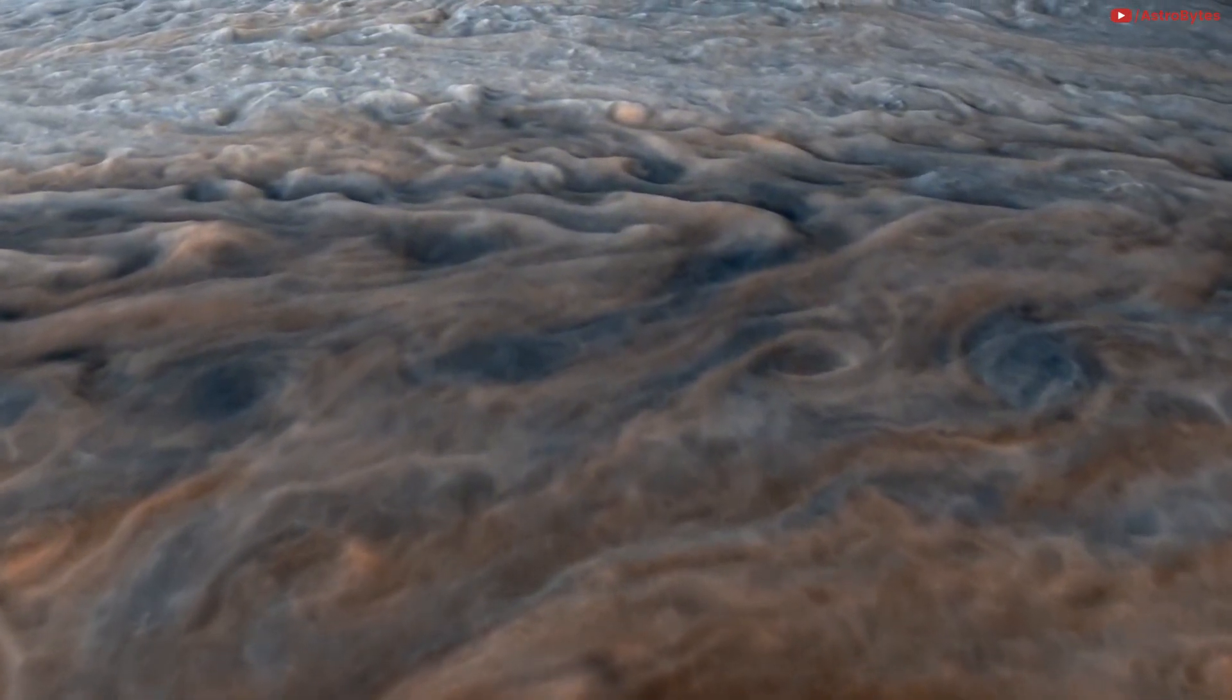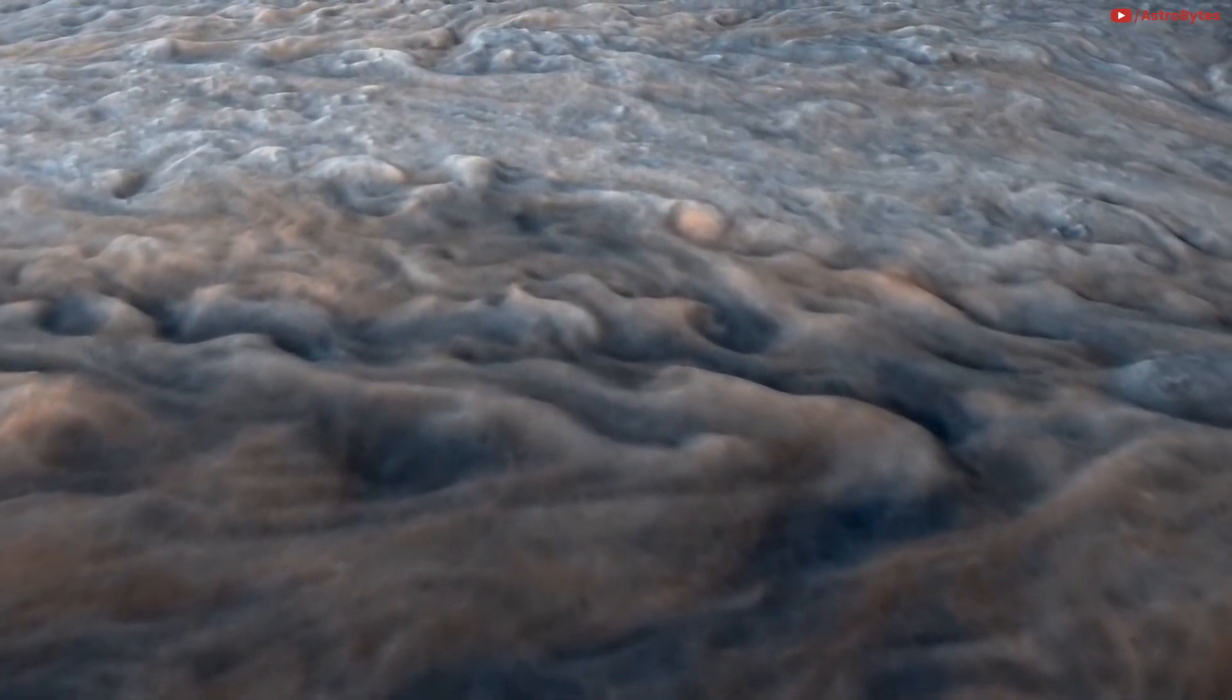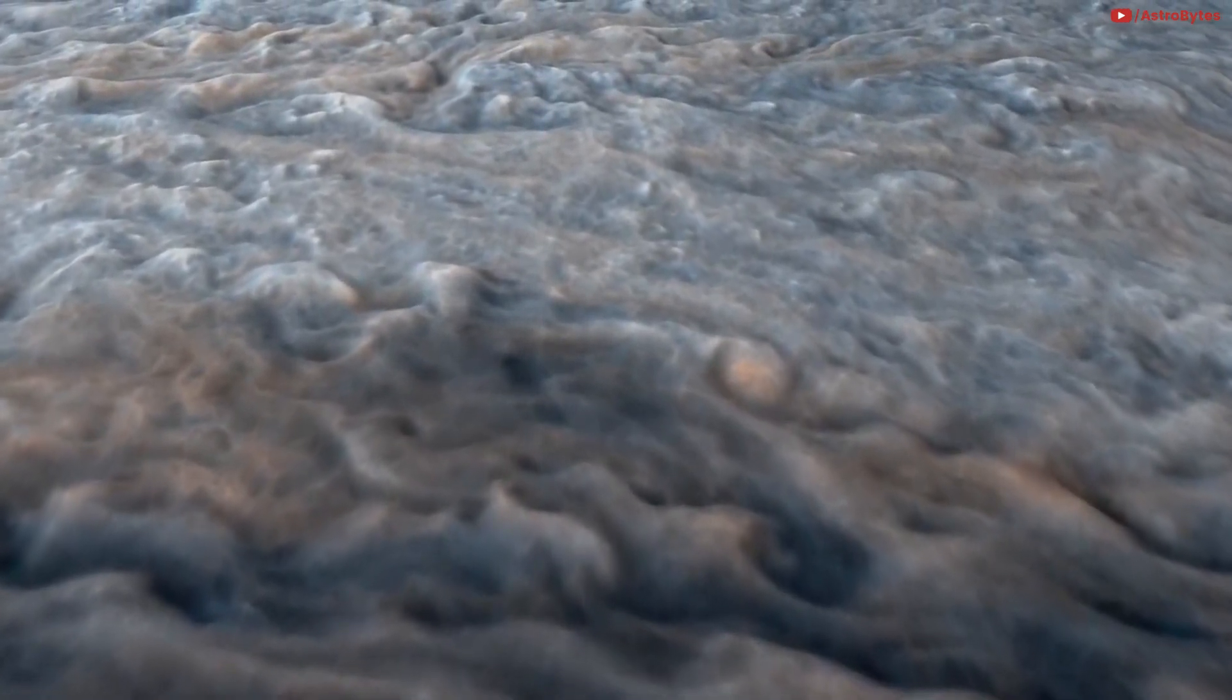As a gas giant, Saturn doesn't have a true surface. The planet is mostly swirling gases and liquids deep down.